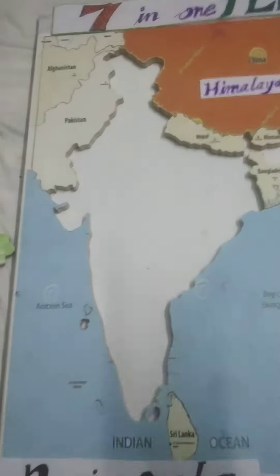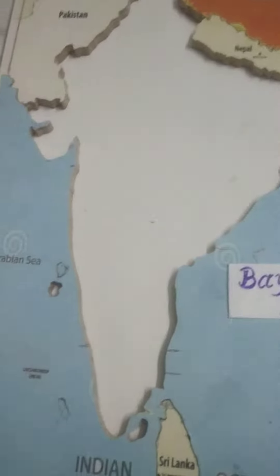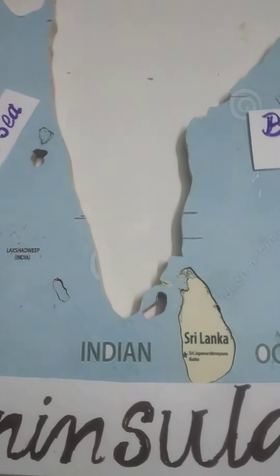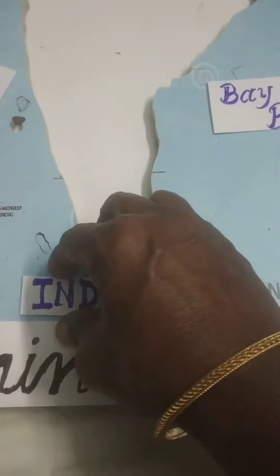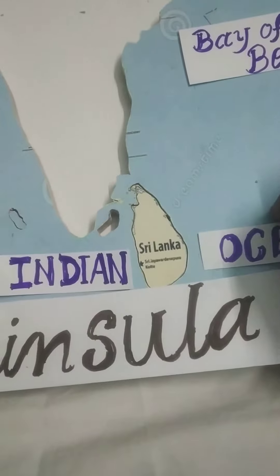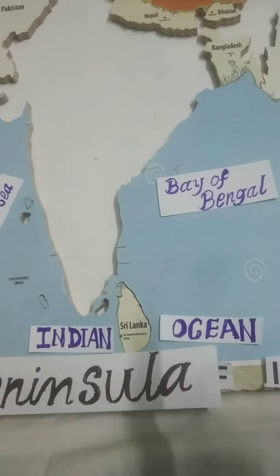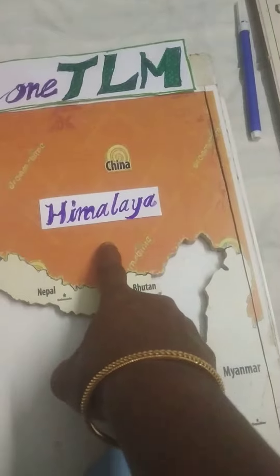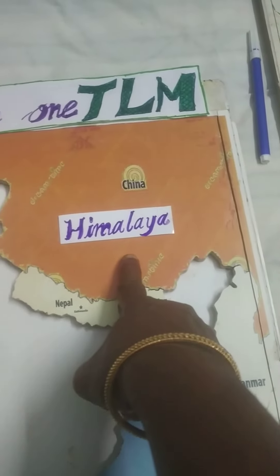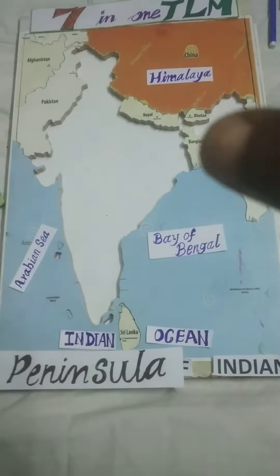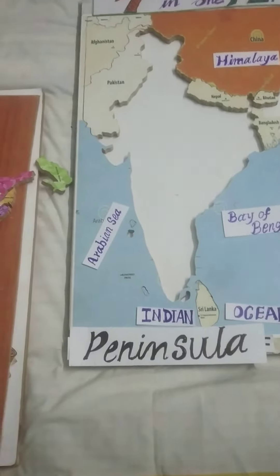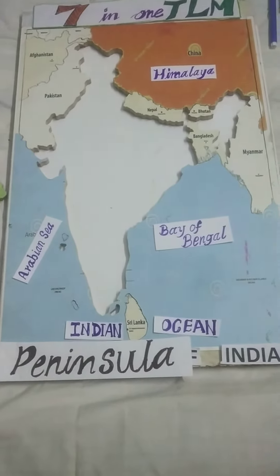Again: East — Bay of Bengal. West — Arabian Sea. South — Indian Ocean. Three sides surrounded by water, one side surrounded by land — Himalaya. So, India is Peninsula.